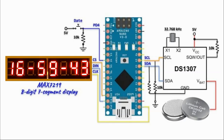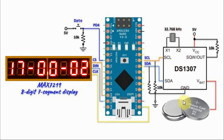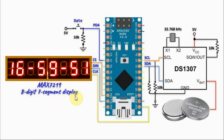A circuit diagram of the implemented system is shown here. The DS1307 IC is interfaced with the Arduino using an I2C connection, powered by a crystal oscillator running at 32.768 kHz, and its RAM is backed up by a lithium cell battery connected to the battery pin. Also interfaced with the Arduino is the MAX7219 8-digit 7-segment display, connected via SPI, and a push button connected to a digital pin which, when pressed, will display data on the MAX7219.